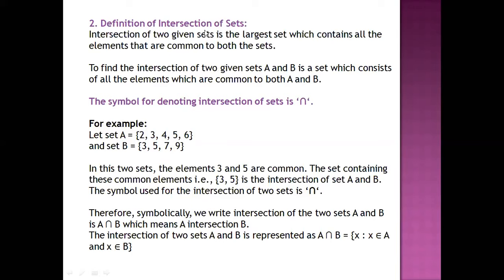Next, the definition of intersection of sets. The intersection of two sets is the largest set which contains all the elements common to both sets. In intersection, we take the common elements that are included in both sets — those common elements will be our answer.